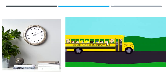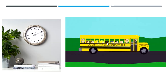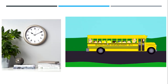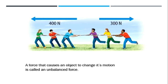There is no change in velocity means the forces are balanced. On the other hand, with unbalanced forces — for example, 400 newtons versus 300 newtons — there is movement and a disturbance. The side with more force wins. A force that causes an object to change its motion is called an unbalanced force. Unbalanced force is present when there is a change in motion.